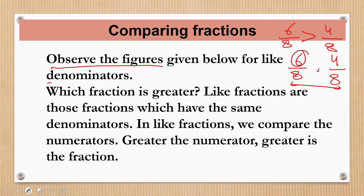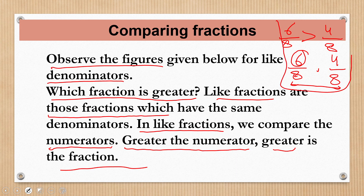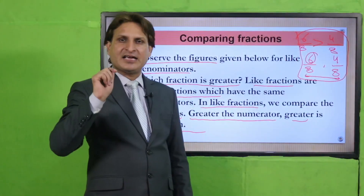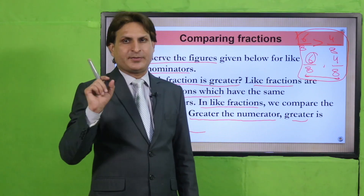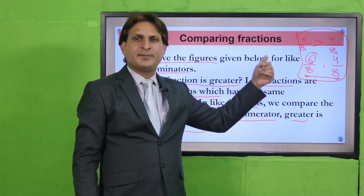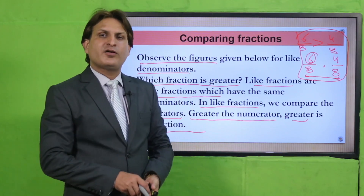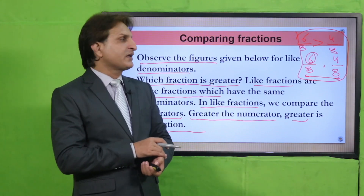Observe the figure given below for like denominators: which fraction is greater? Like fractions are those fractions which have the same denominators. In like fractions, we compare the numerator — greater the numerator, greater is the fraction. دونوں fractions کو compare کرنا ہے. Like fractions کب ہوتی ہیں؟ جب given fractions کا denominator same ہو. تو ہم numerator کو compare کرتے ہیں. جس fraction کا numerator greater ہوگا وہ fraction greater ہوگی، اور جس کا less ہوگا وہ less ہوگی.